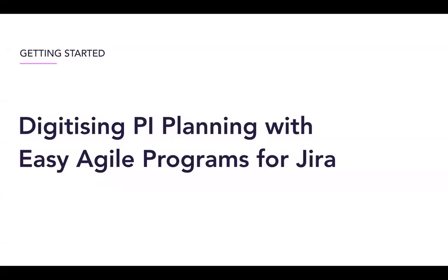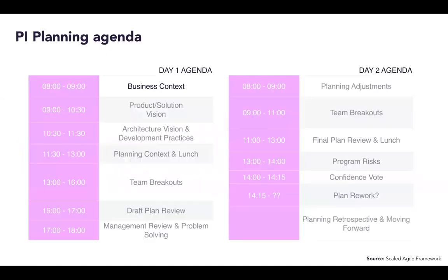Understanding that this problem existed and that our larger customers were really challenged by doing this planning session physically, at Easy Agile we built a product called Easy Agile Programs. Our goal is to help teams with distributed planning at scale, by making something that is native to JIRA and that enables better cross-team visibility and dependency visualization. We're now going to walk through the standard two-day PI planning agenda prescribed by the Scaled Agile Framework and look at how each task can be managed digitally using Easy Agile Programs.